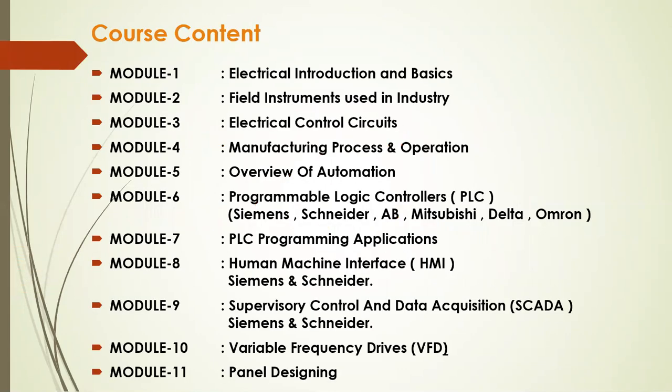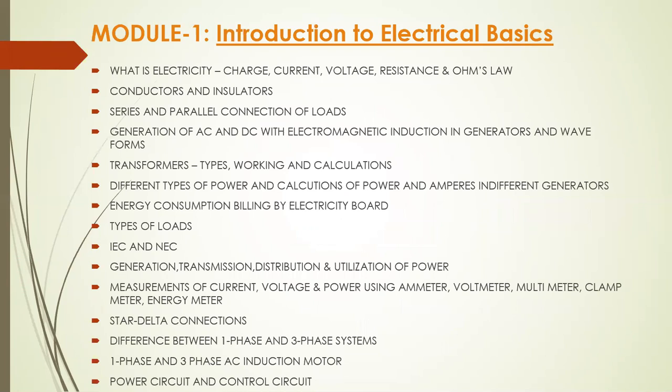That's why we have divided the course into 11 modules. Module 1 covers the basics of electrical engineering, and then field instruments. The third module covers control and power wiring. The fourth and fifth cover the overview of automation as well as the manufacturing process in any given industry, followed by PLC, HMI, SCADA, VFD, and panel design.